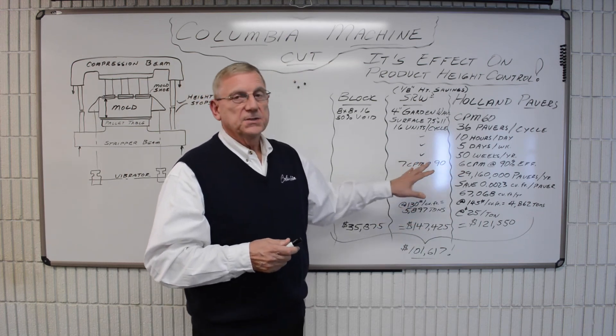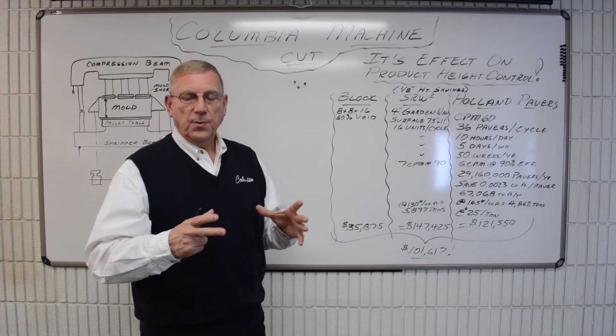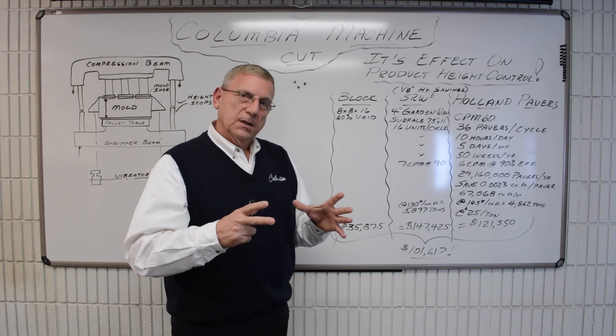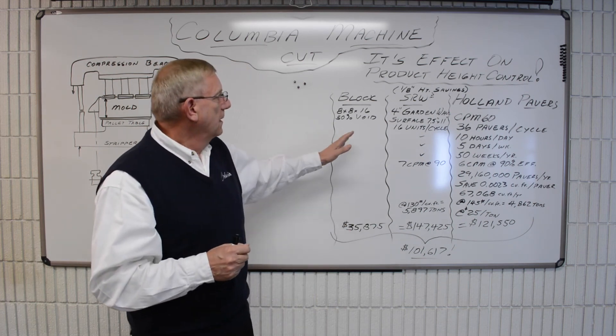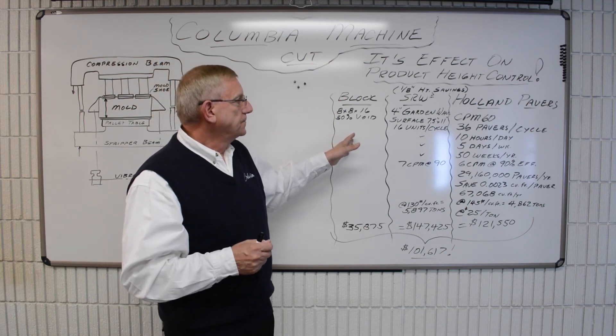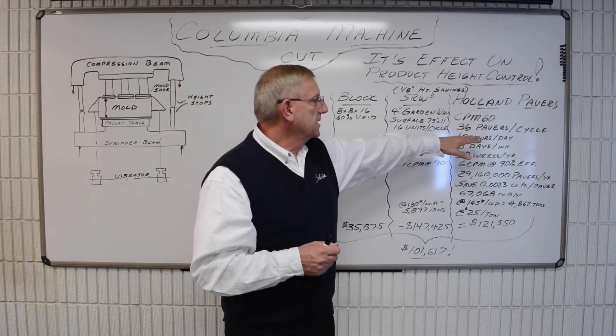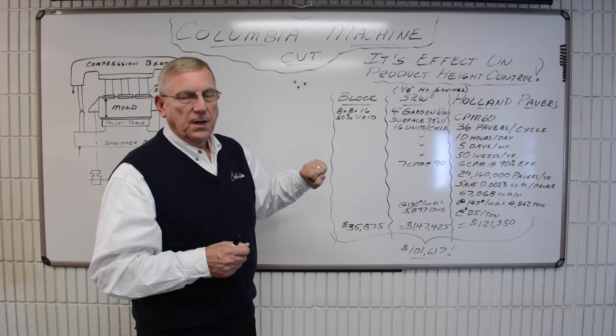Now in both of these cases, we're dealing with products that are solids, that cover a lot of surface area of the pallet. If we look at block, and on this pallet size, you would make six blocks per cycle.